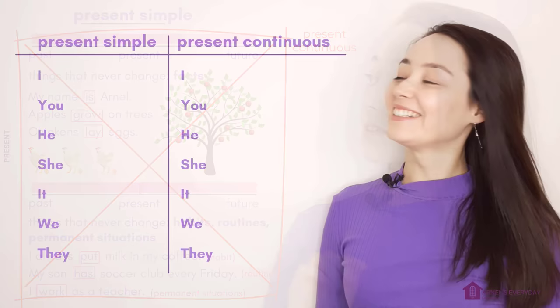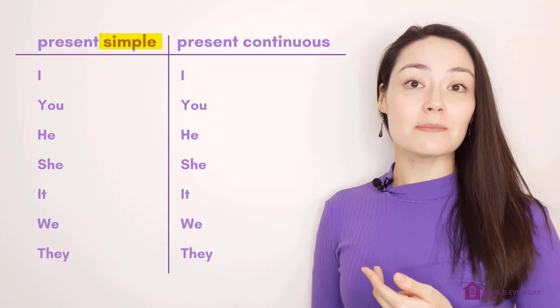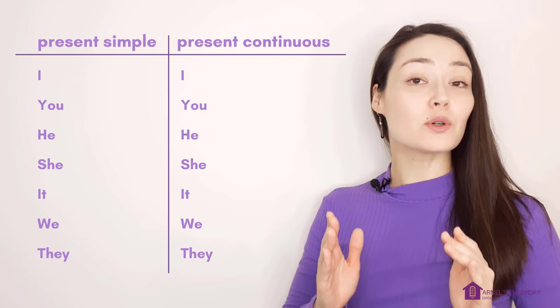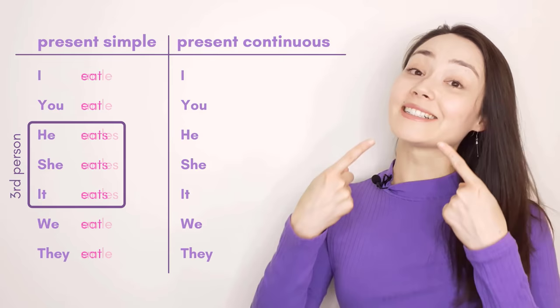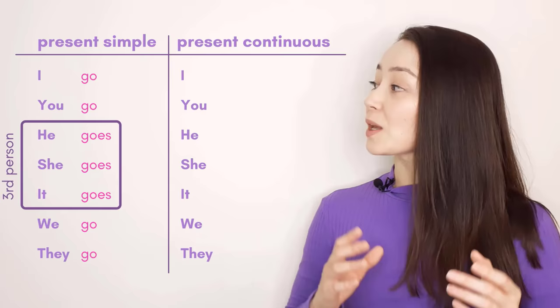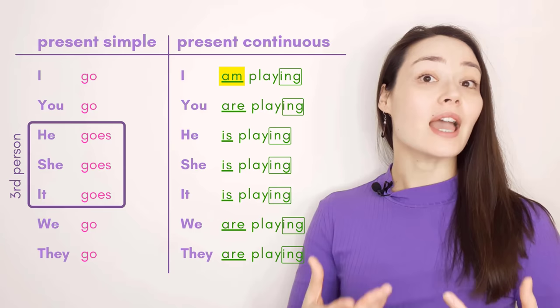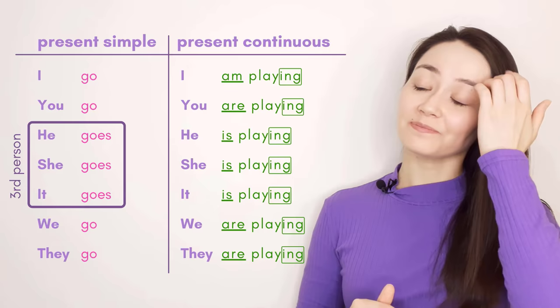Basics. Formation. You can see here I have my present simple and present continuous. The present simple uses the base verb — verb number one — like play, eat, smile, go. Remember that third person form. With present continuous, I have my B form: I am, you are, etc., plus that verb -ing: playing, eating, smiling, going.